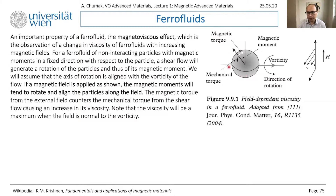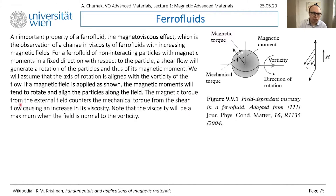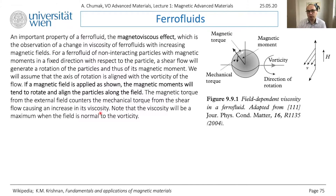When you apply a magnetic field, the field always wants to align the magnetization along the field direction. Since the particle cannot rotate as freely anymore, the magnetic moments tend to align the particle along the field. The magnetic torque from the external field counters the mechanical torque from the shear flow, causing an increase in viscosity - since the particle cannot roll so easily, the magnetic field keeps it stable and changes the overall viscosity.